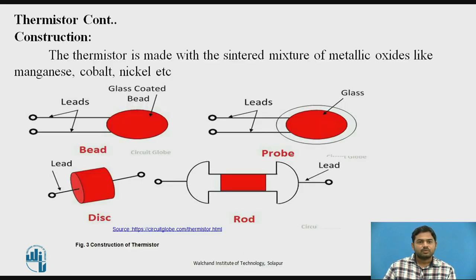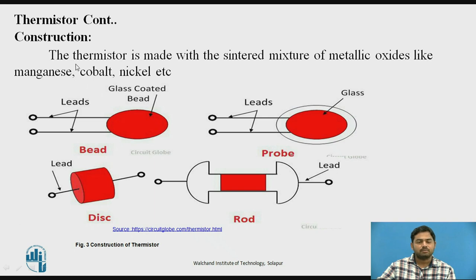Now, coming to the construction of thermistors. The material used in thermistors is metal oxides — for example, copper oxide and magnesium oxide. Different structural forms are made using these materials: bead type, probe type, disc type, and rod type structures.